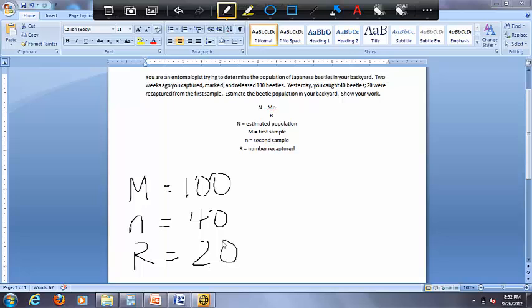So now all we need to do is basically plug that into the formula. So again, big N or your population equals big M, so 100, times little n, which is 40, divided by big R, which is 20.